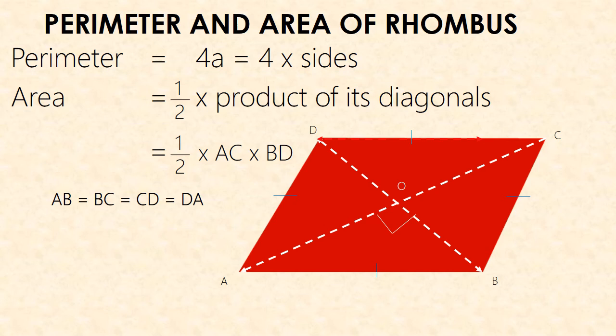Here, AB, BC, CD, and DA — all sides are equal in the rhombus.